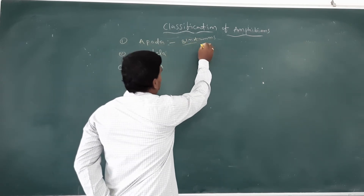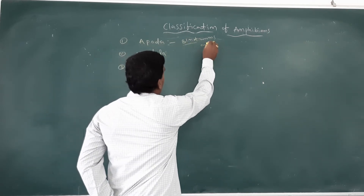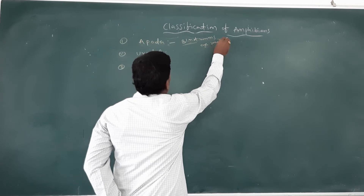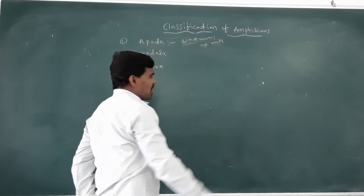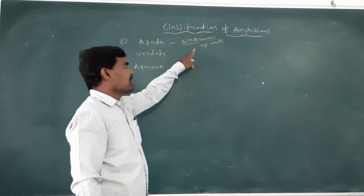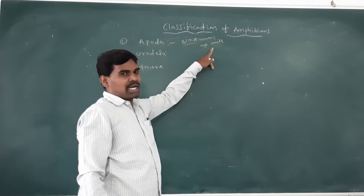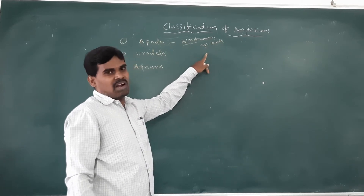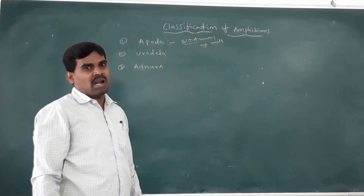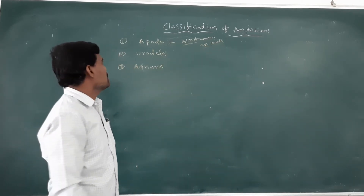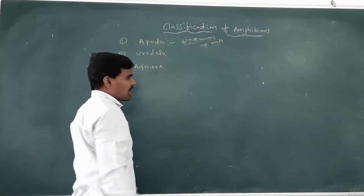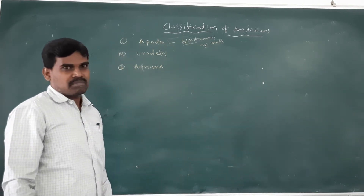The tail is small and non-functional in the Apoda class of Amphibians. The ribs are present in the Apoda class.